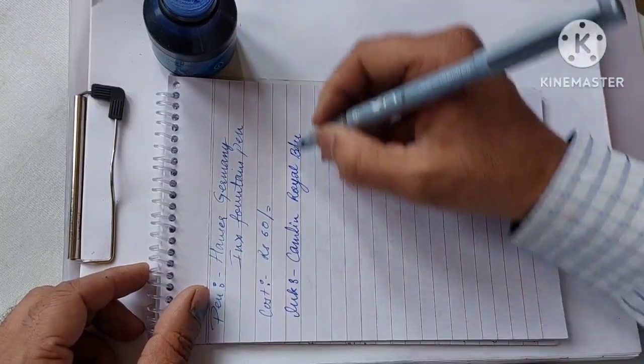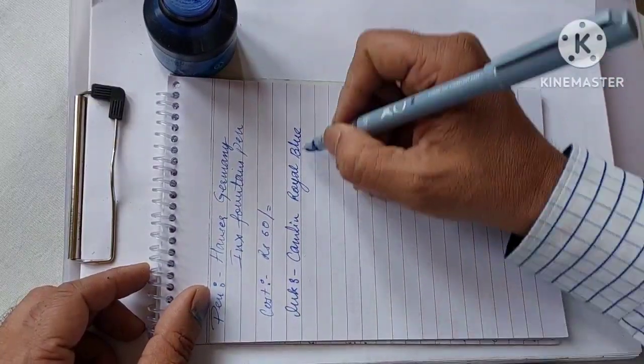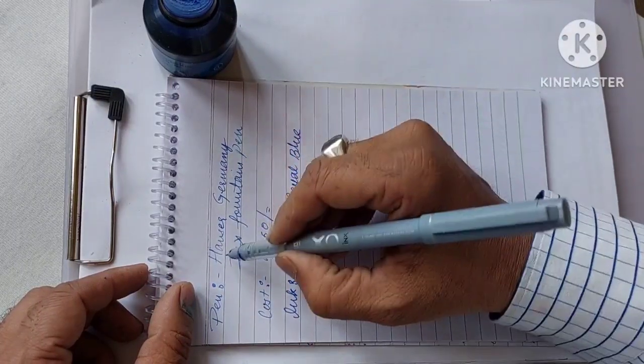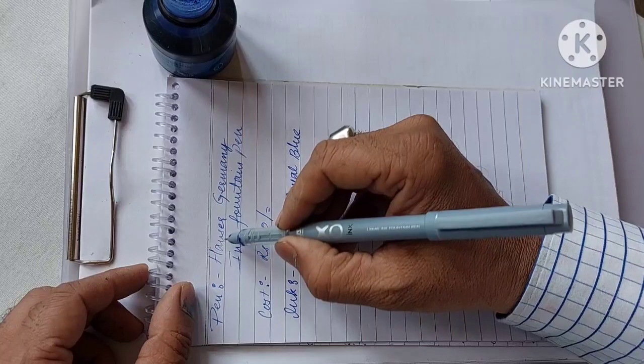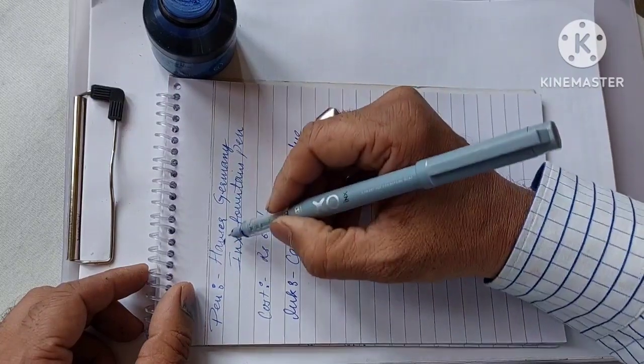Yes now the ink has been properly absorbed and now it is giving a consistent flow. At the beginning the ink was not absorbed properly inside the feeder because of which you can see there is a shading over here, light shading.